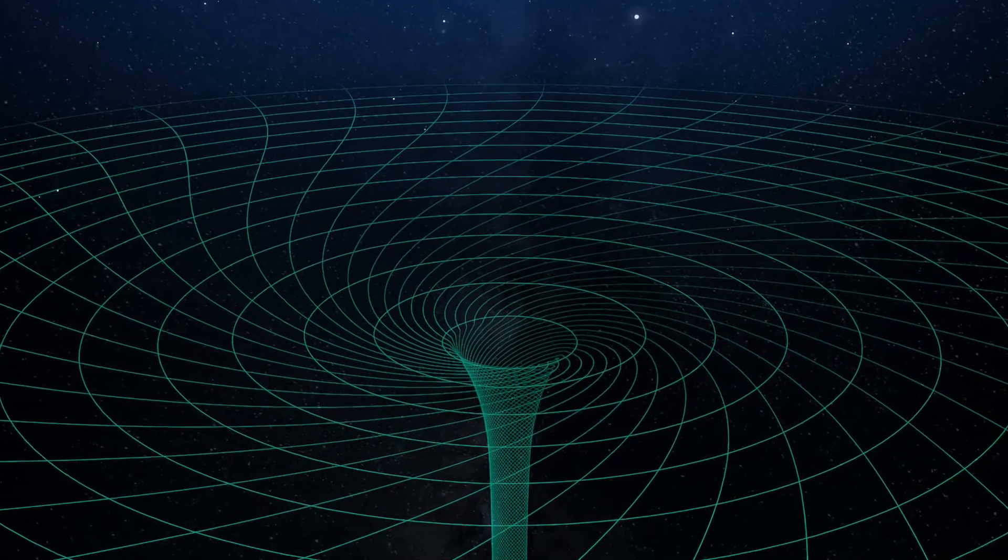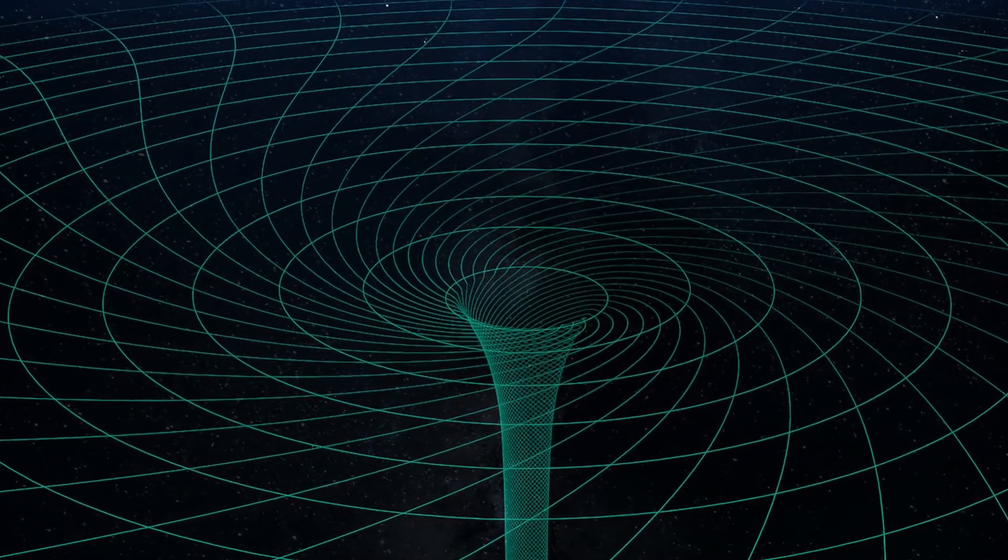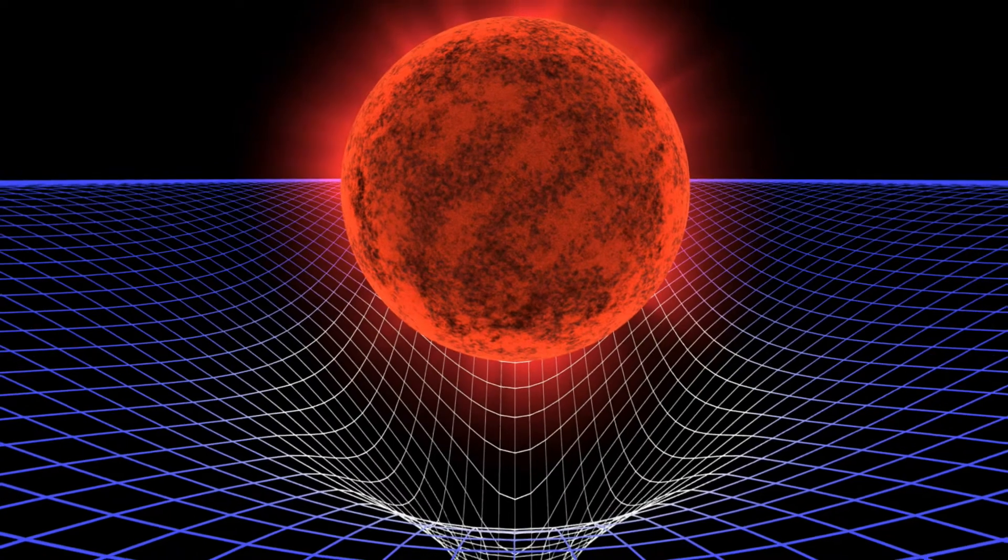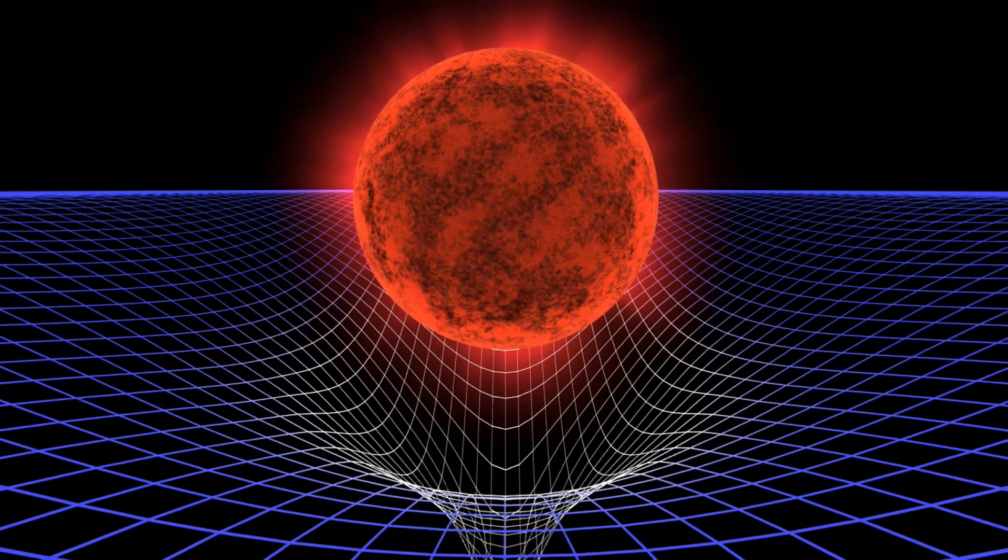Let us look at an example to understand the space-time curve better. Take a cloth and pull the four edges. If we keep a heavy ball on the cloth, the cloth curves inward depending upon the mass of the ball. And now, if we make a small ball revolve around the big ball, the small ball will orbit around the big ball until it falls inside the depression created by the big ball. This is how gravity works by attracting the smaller mass objects near it to orbit over the larger mass ones.